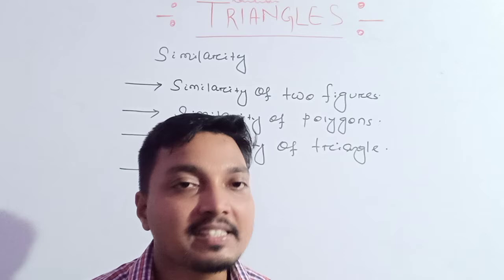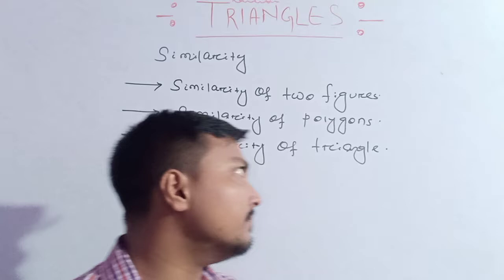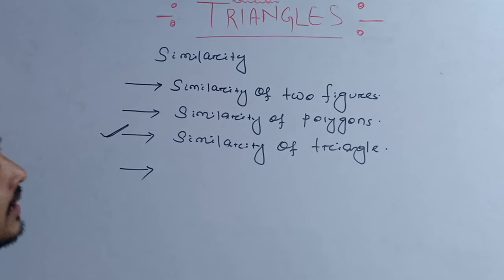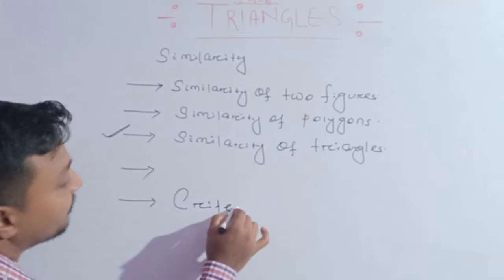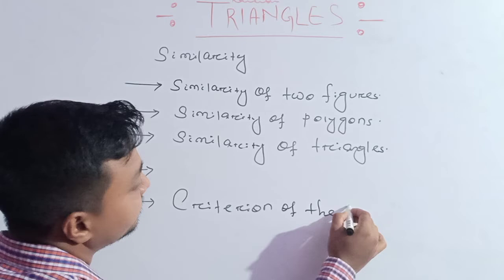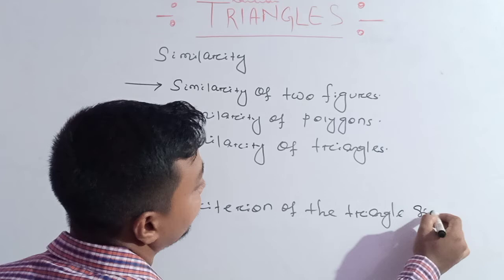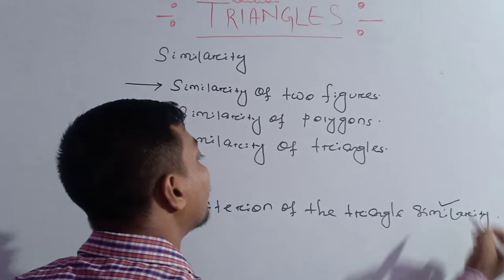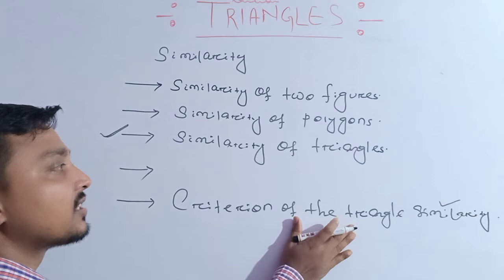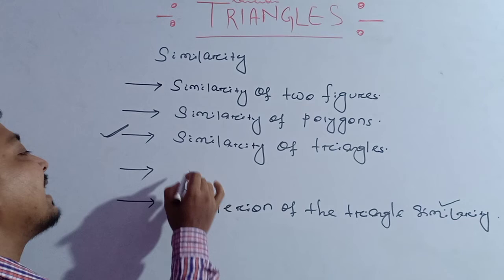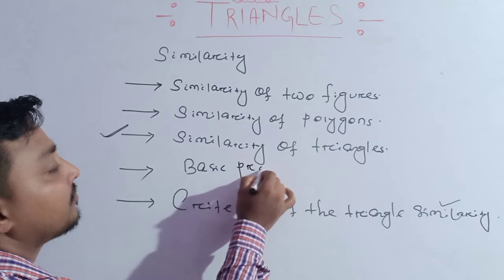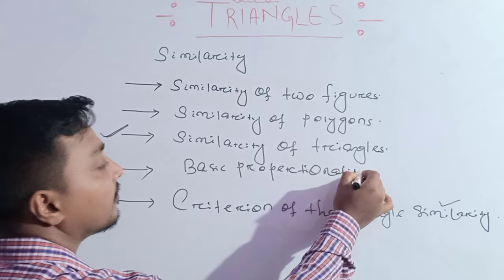In the same way, here we first have to learn the normal formula to check whether the triangles are similar or not. Then we have to learn the easy trick — the criterion of triangle similarity. We will also learn its proof, but before proving it, we need to learn two theorems. Using those theorems we can show the proof of the criterion of triangle similarity. The name of those theorems is the Basic Proportionality Theorem and its converse theorem.